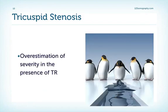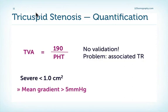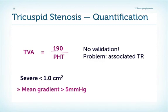Another important consideration: you can overestimate the severity of tricuspid stenosis if additional tricuspid regurgitation is present, because you'll simply have more flow across the tricuspid valve. There is not very much literature on how to quantify tricuspid stenosis. If you use the pressure half-time method, it's probably better to use 190 instead of 220 as the divisor. This is the only method you can use to calculate the tricuspid valve area — planimetry simply doesn't work. Severe tricuspid stenosis is defined as a valve area below 1 cm². The normal tricuspid valve is much larger than the mitral valve, so significant changes must occur before you reach severe stenosis. Using mean gradients, a gradient above 5 mmHg indicates severe tricuspid stenosis — but remember, tricuspid regurgitation and cardiac output also play an important role with respect to the gradients.